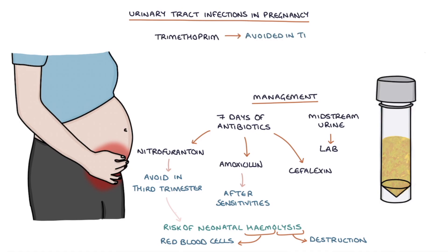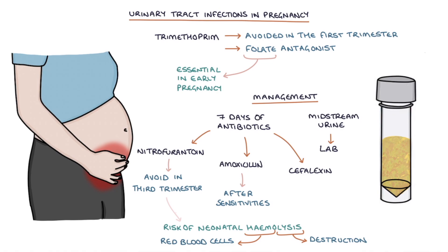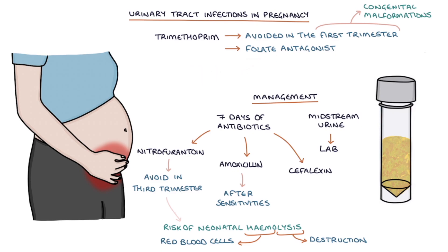Trimethoprim needs to be avoided in the first trimester as it works as a folate antagonist. Folate is essential in early pregnancy for the normal development of the fetus, which is why we give pregnant women folic acid supplementation. Trimethoprim in early pregnancy can cause congenital malformations, particularly neural tube defects such as spina bifida. It's not known to be harmful later in pregnancy, but is generally avoided unless necessary.